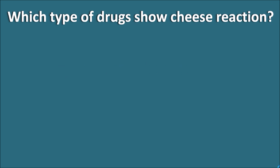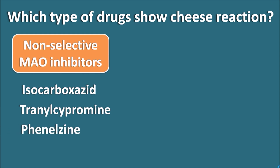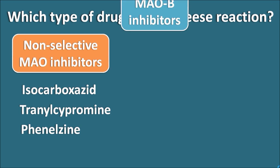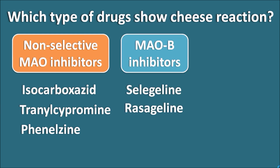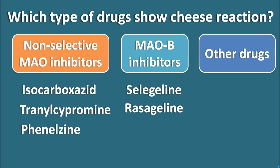Cheese reaction is shown mainly by non-selective MAO inhibitors, which inhibit both MAO-A and MAO-B enzymes. Drugs in this category include isocarboxazid, tranylcypromine, and phenelzine — all three carry a potential risk of producing cheese reaction when given with tyramine-containing food. MAO-B inhibitors such as selegiline and rasagiline, used to treat Parkinson's disease, can also precipitate cheese reaction. Other drugs with MAO inhibitory activity, such as linezolid — an antibacterial with weak MAO inhibitory activity — may also precipitate cheese reaction.